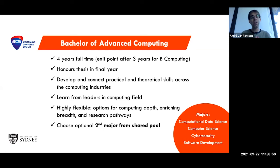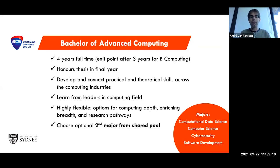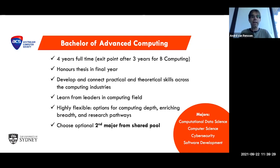Then in your second year is where the real fun starts. You will really start to see the specializations of the major that you pick. We currently offer four majors. We offer the computational data science major, which basically allows you to specialize in analyzing data, collecting data — everything related to big data that companies are gathering on, for example, their customers — and then seeing how you can use this to improve their systems and revenues.